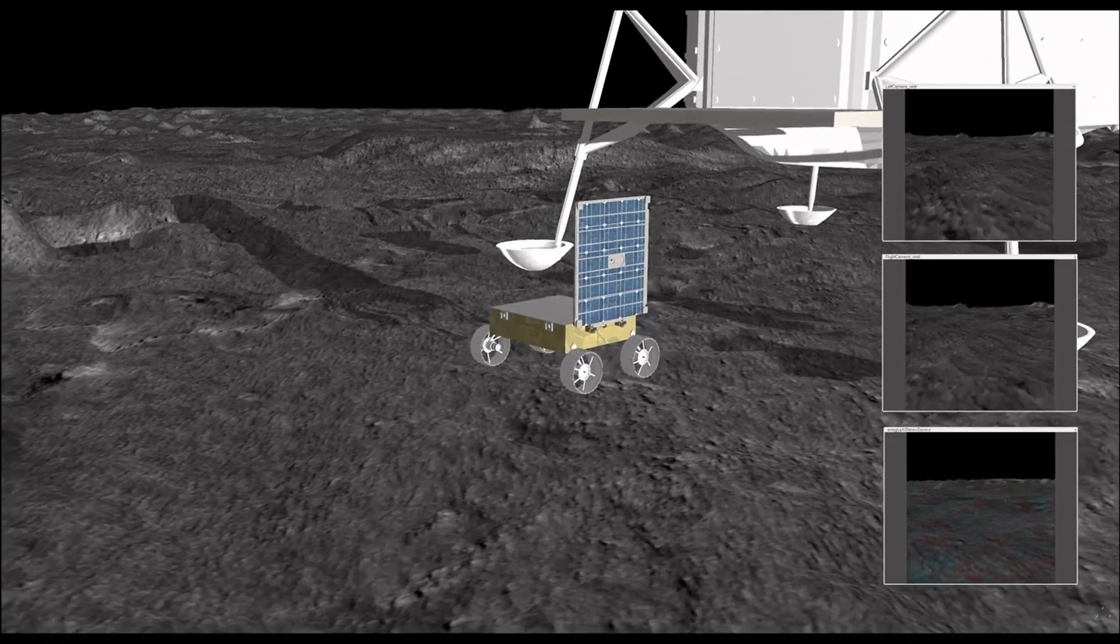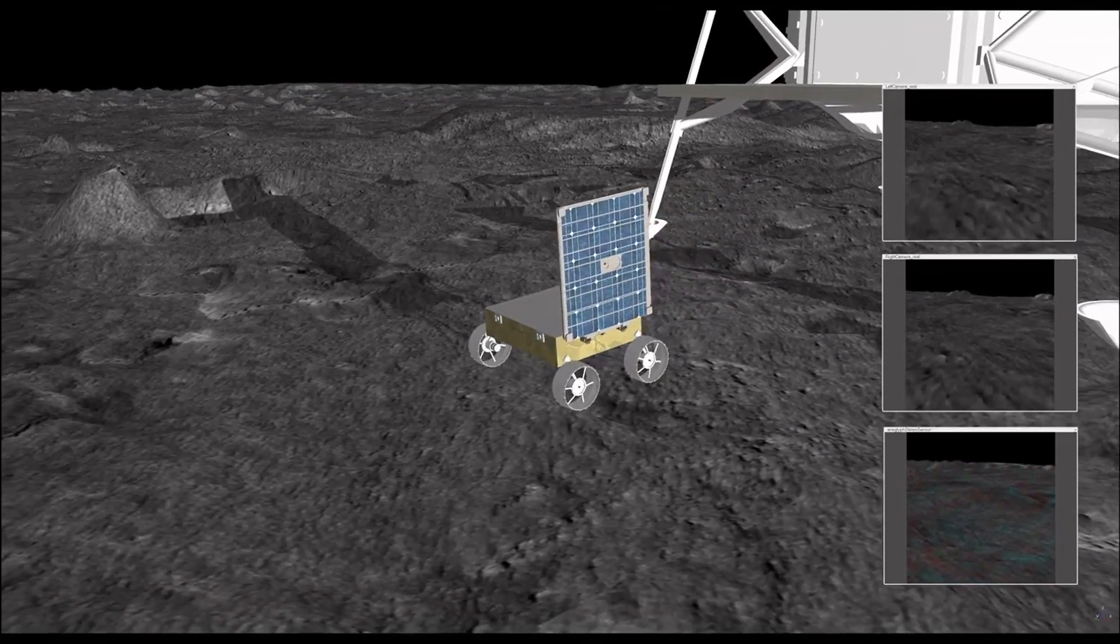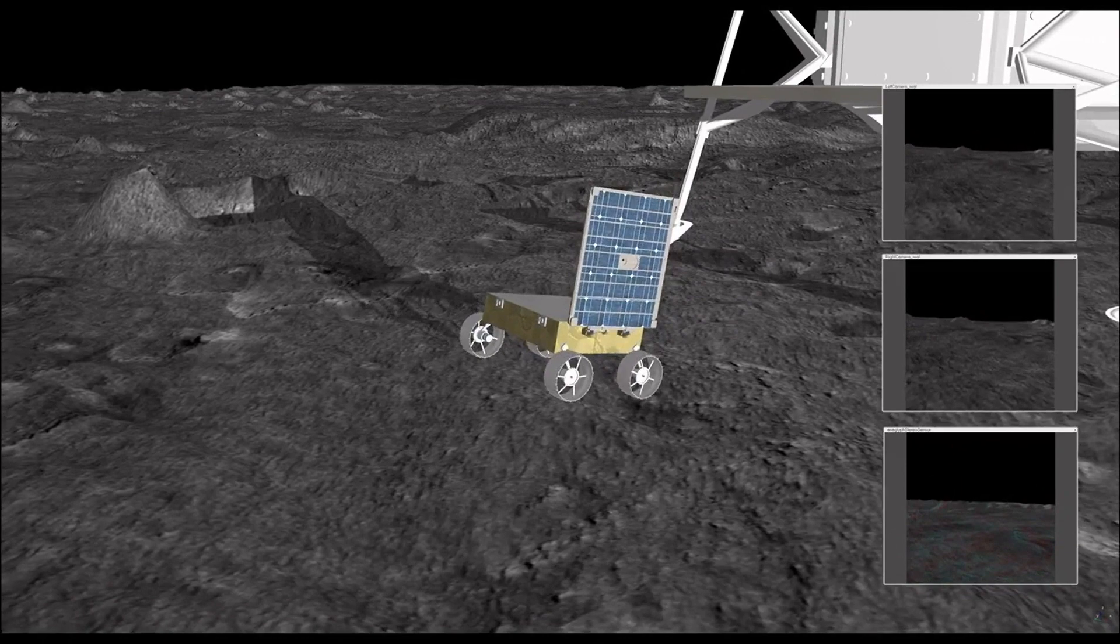A micro rover is too small to carry a radio that can reach Earth, so exploration, when out of range from the lander, must be completely autonomous.